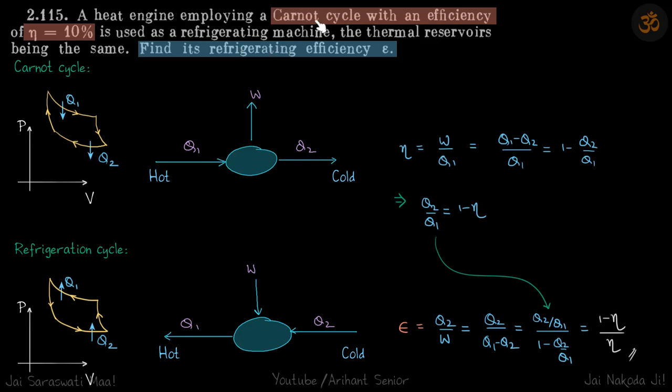A heat engine employing a Carnot cycle has an efficiency η. The same heat engine is reversed and used as a refrigerating machine. We need to find the refrigerating efficiency of that refrigerating machine.